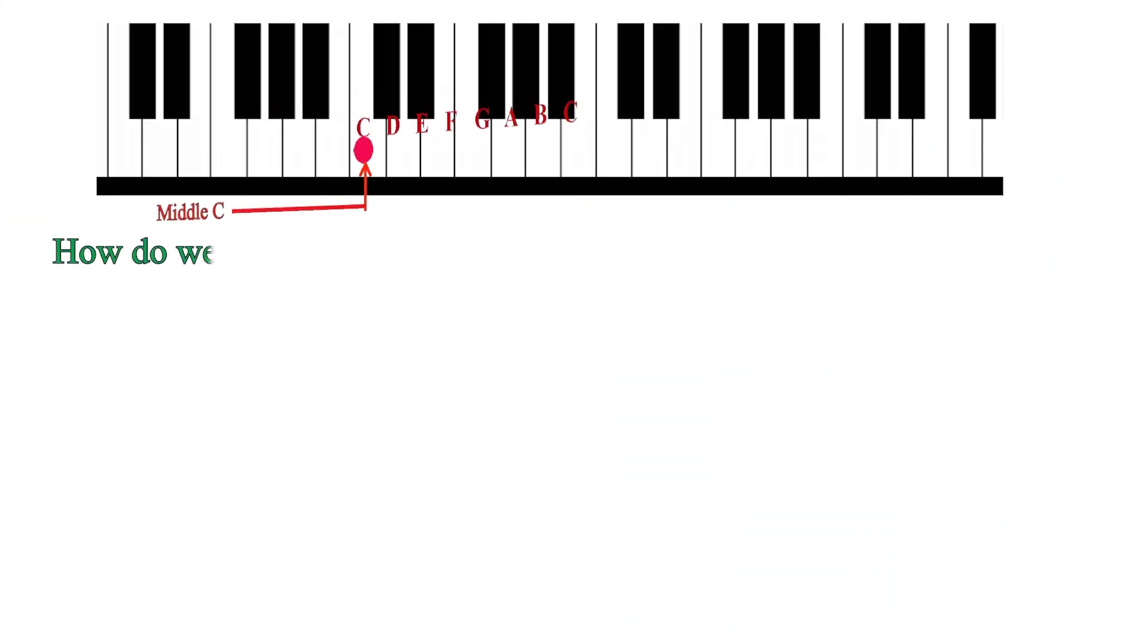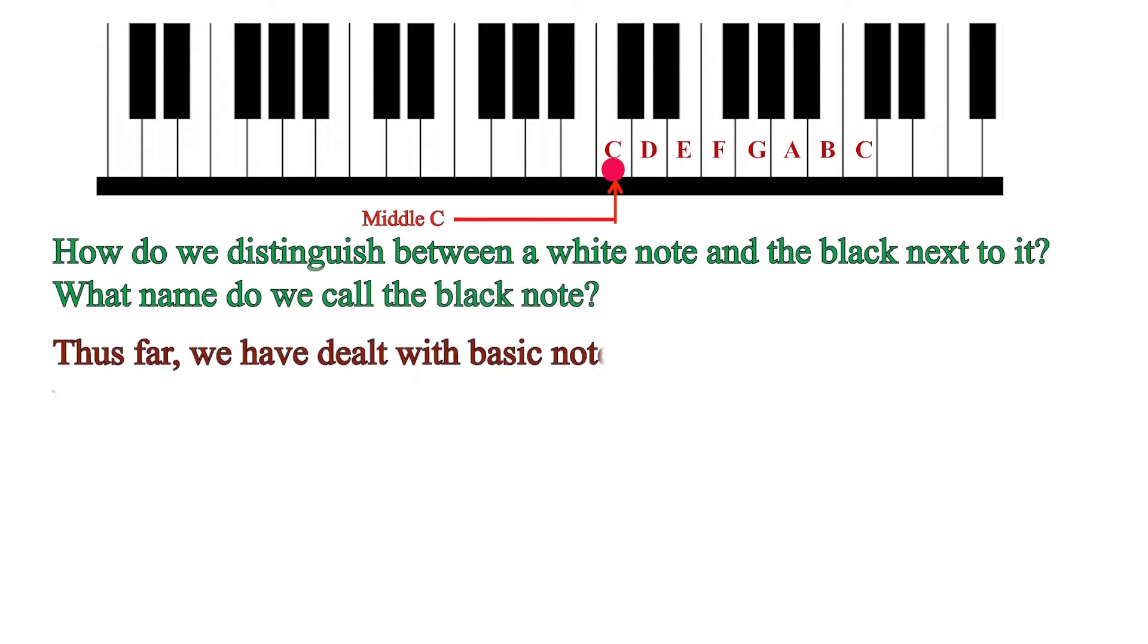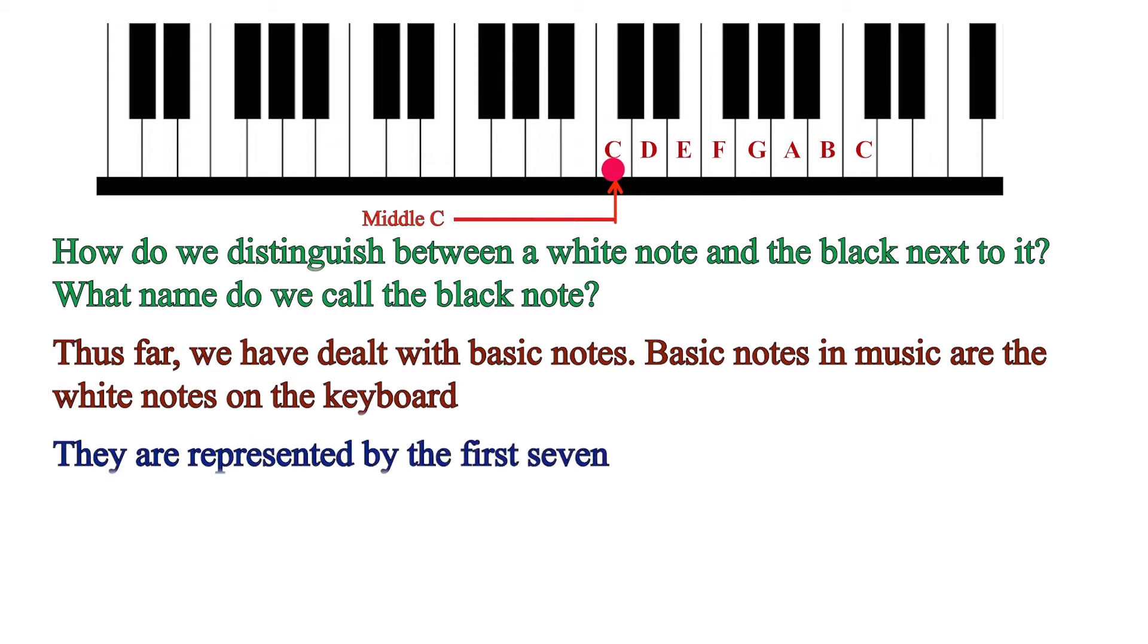Accidentals. How do we distinguish between a white note and the black next to it? What name do we call the black note? Thus far, we have been dealing with basic notes. Basic notes in music are the white notes on the keyboard and they are represented by the first seven letters of the English alphabet: A, B, C, D, E, F, and G.